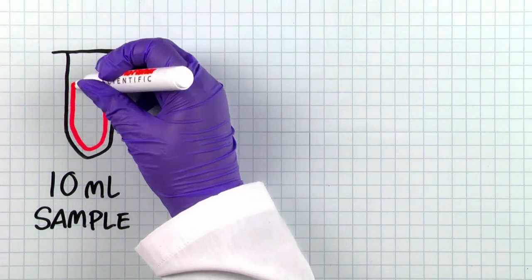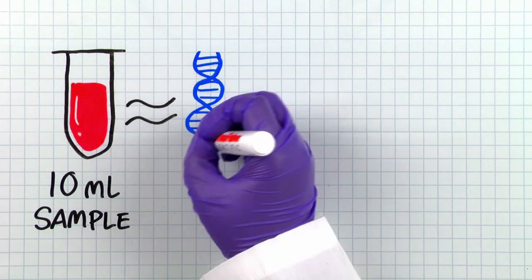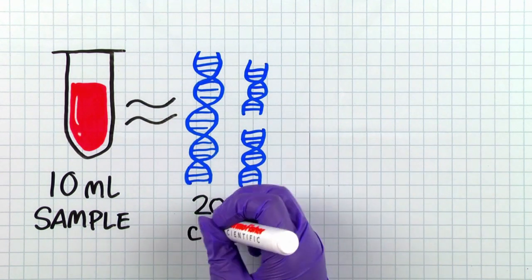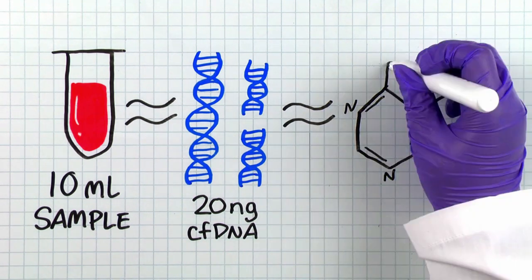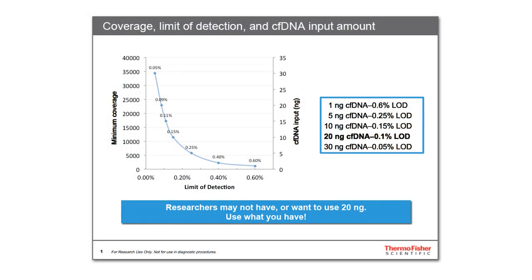From a 10-milliliter blood sample, using the Applied Biosystems MagMax Cell-Free DNA Isolation Kit, we routinely obtain about 20 nanograms of CF-DNA for analysis. Some quick math shows us that at 1% limit of detection, we can expect around 25 molecules. At 0.1%, only 2-3 molecules are expected to be present. That means that below 0.1%, there may not be any molecules present for analysis.